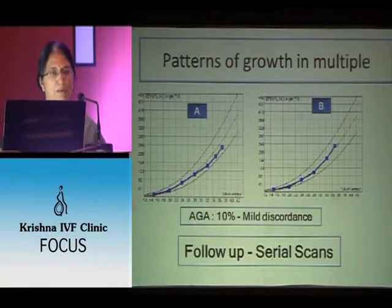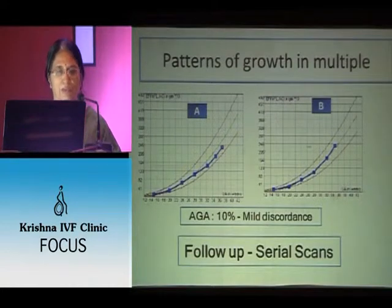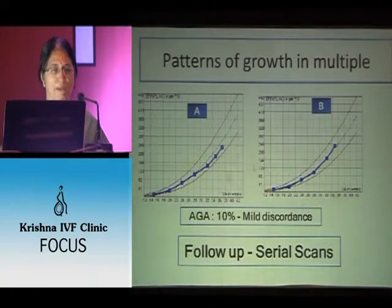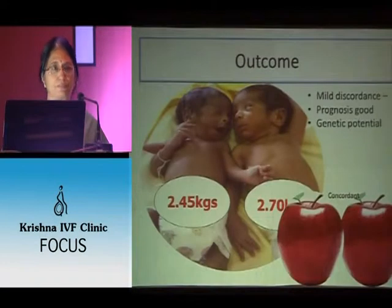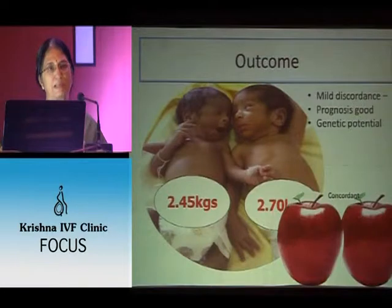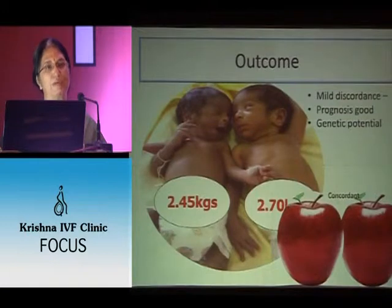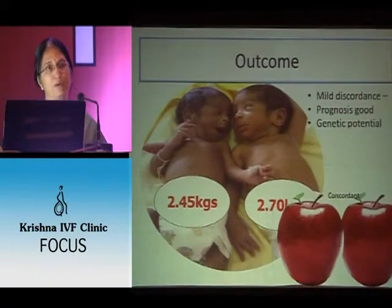In another example, fetus A and fetus B are both growing along the green line with linear growth. The difference is about 10% — mild discordance — prognosis is good. The weights are about 2.4 and 2.7 kilograms, both AGA, with 10 to 15% discordancy. With mild discordance the prognosis is very good because it just reflects different genetic potential.